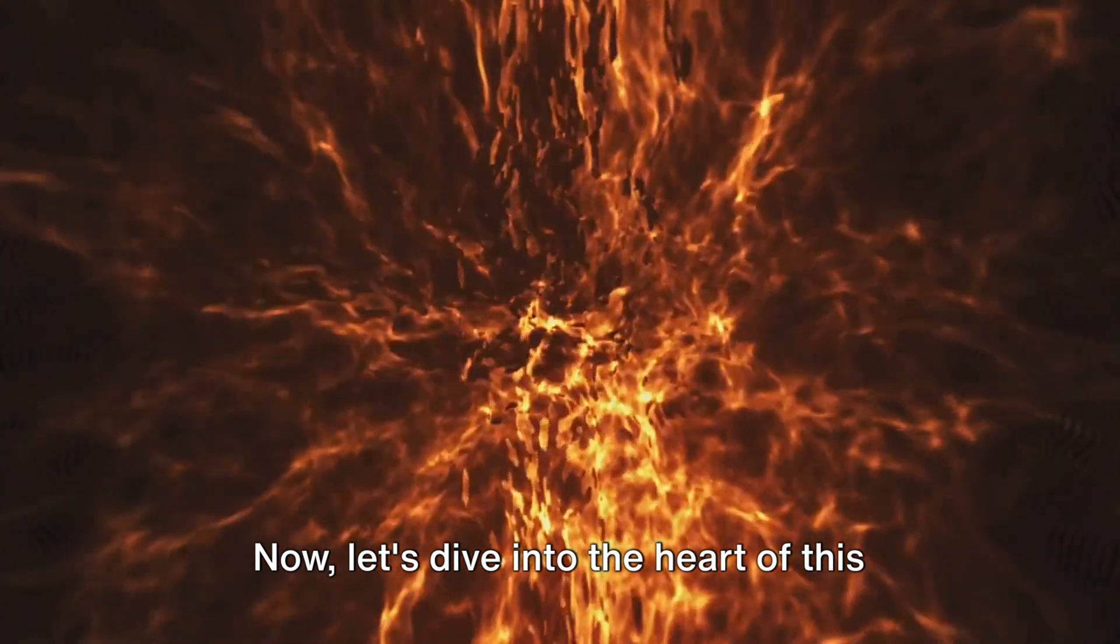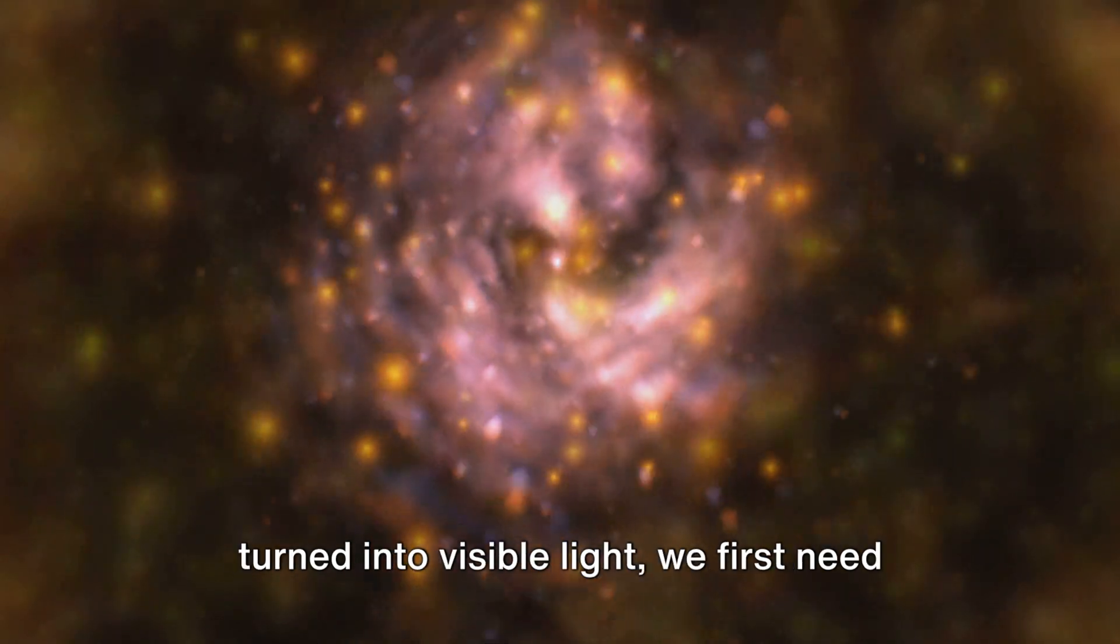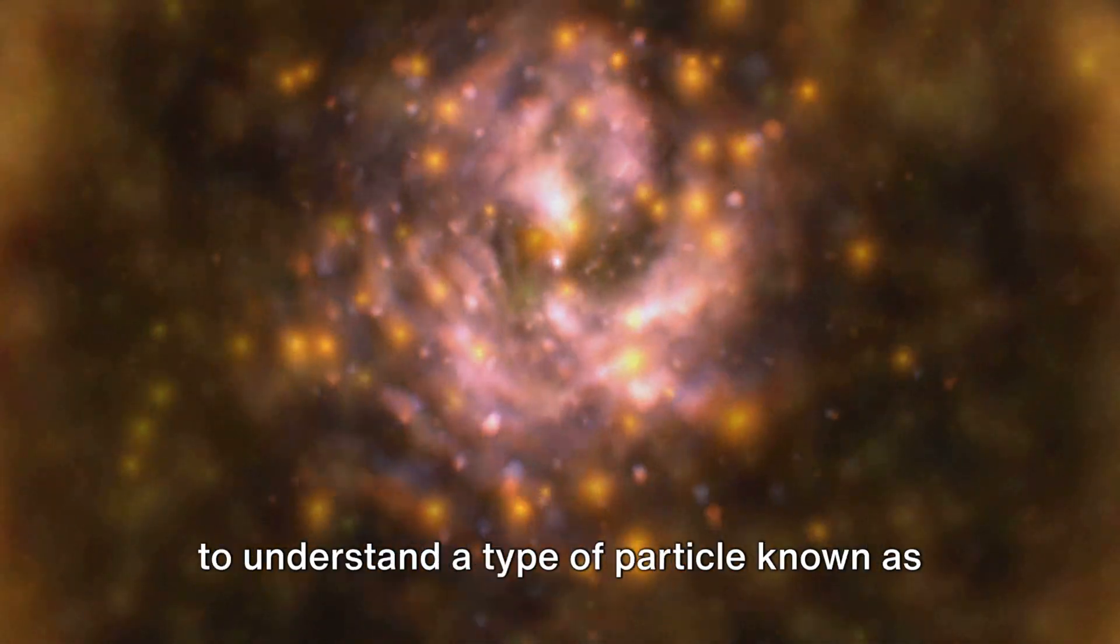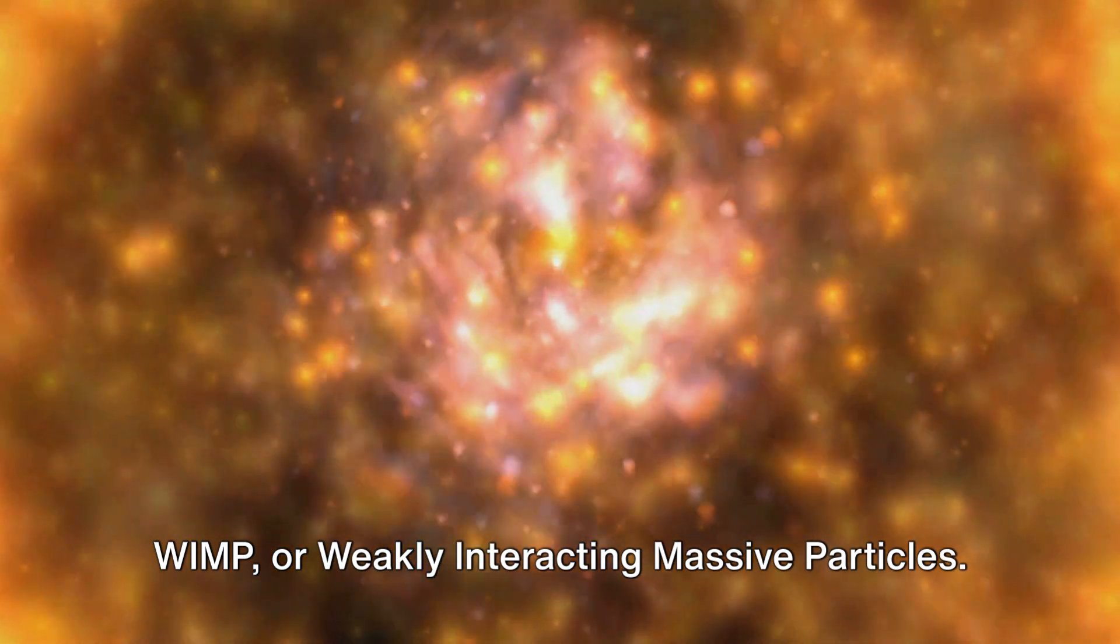Now let's dive into the heart of this fascinating concept. To understand how dark matter can be turned into visible light, we first need to understand a type of particle known as WIMP, or weakly interacting massive particles.